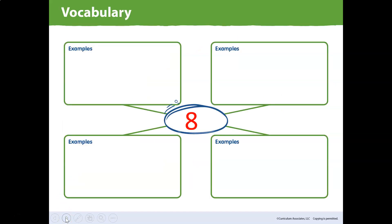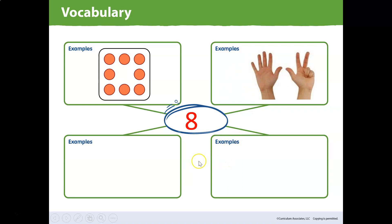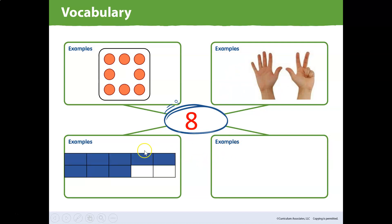Let's go ahead and move on to this page right here — this is page 109. What does it say? What number do you see in the middle? Yes, that's the number eight. So we're going to give examples of showing the number eight. One example: I have eight dots — one, two, three, four, five, six, seven, eight. Another example is with my fingers: five fingers and three fingers. Another example is on the 10-frame: five are filled in on the top and three are filled in on the bottom — that's eight. And my final example: I did four plus four because I know that equals eight.